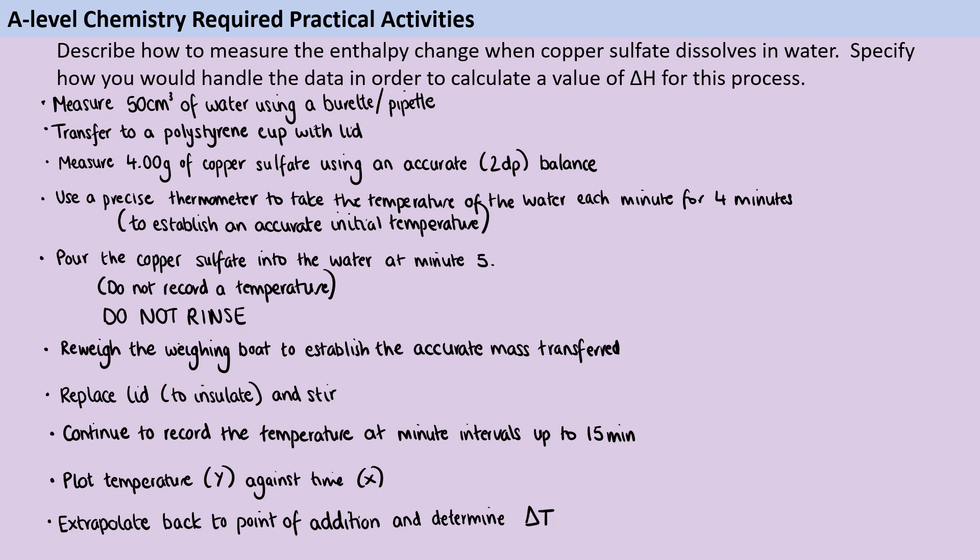Now that I have that value for ΔT, I can do this analysis. The first thing I'm going to do is work out an overall energy change for the process. I'm going to use Q = mcΔT. That's the mass of the water multiplied by the specific heat capacity, which is 4.18, multiplied by the change in temperature, which is whatever I've worked it out to be from the difference between those two lines of best fit where they hit the five minutes.